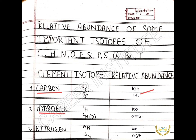The next element is hydrogen. Hydrogen-1 has the relative abundance of 100%. Hydrogen-2, that is deuterium, has the relative abundance of 0.015%.